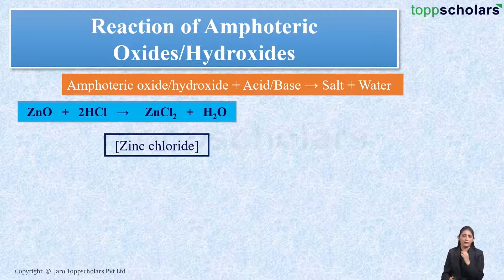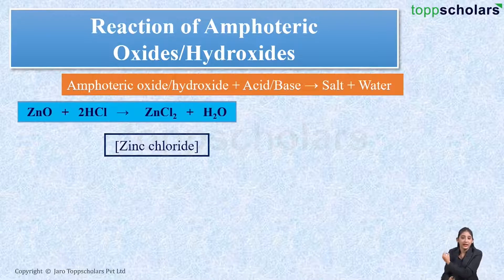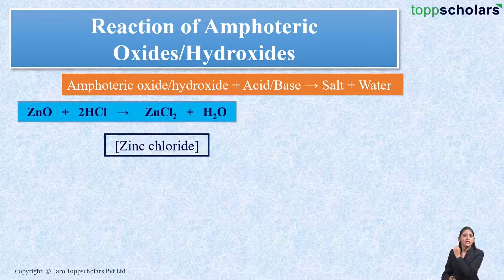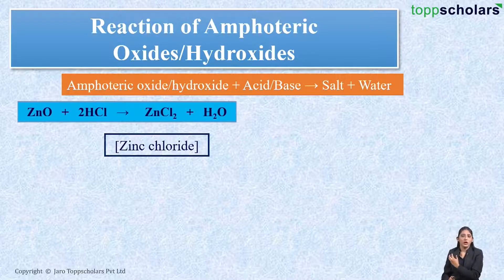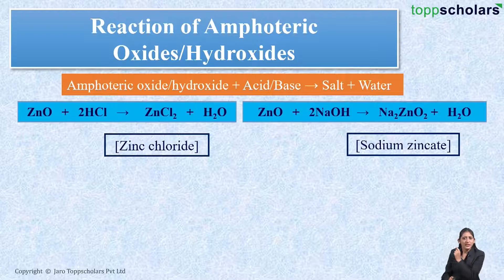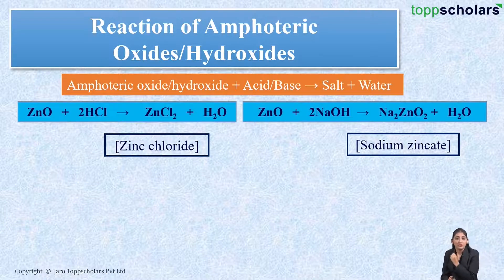Let's take an example. Here I have zinc oxide reacting with hydrochloric acid — the metal oxide is reacting with an acid — and what you get is salt, that is zinc chloride, and water. So here, since zinc oxide is reacting with an acid, zinc oxide behaves as a base.